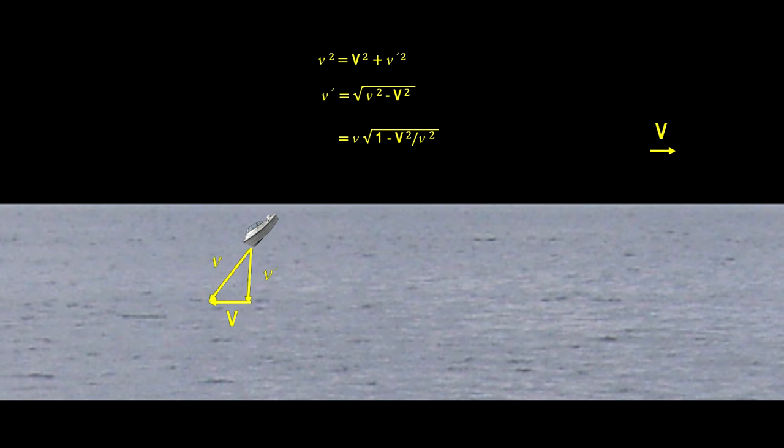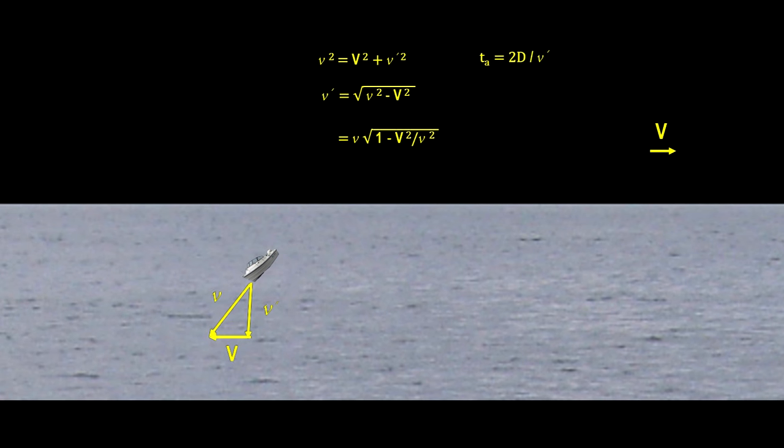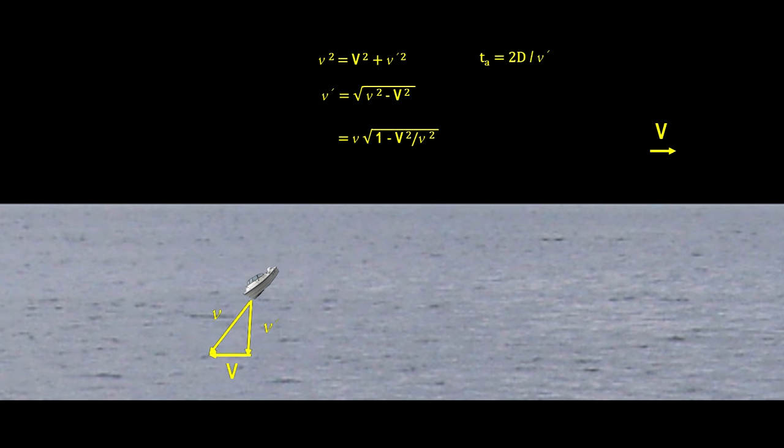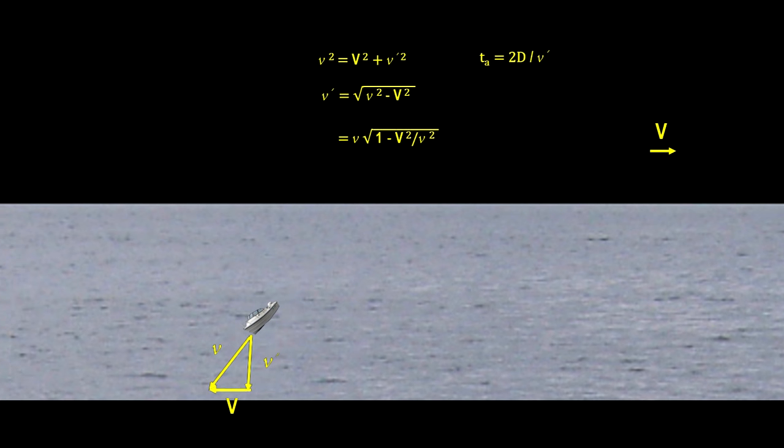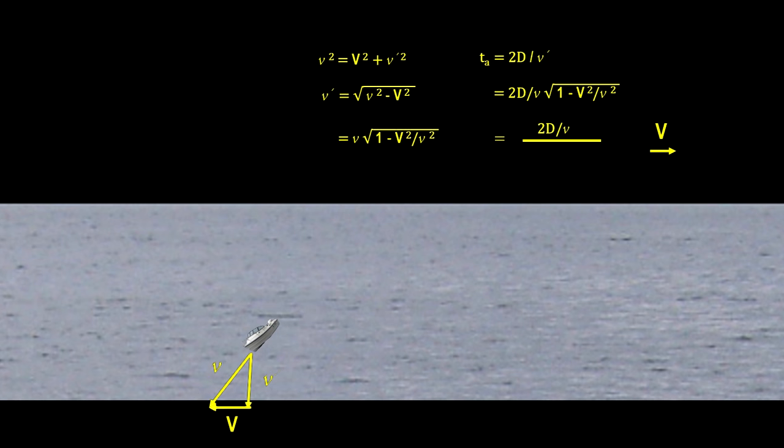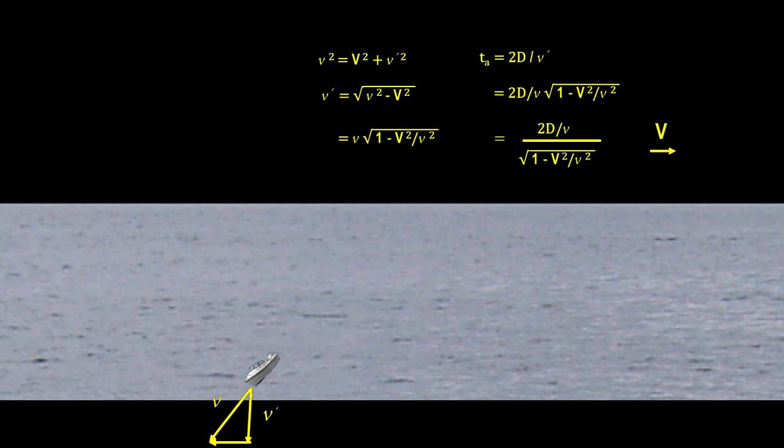The same analysis works for the trip back, so the time for the round trip can be calculated as twice the time for one way. That's two times the distance divided by V'. Substituting the value for V', we get the final equation.